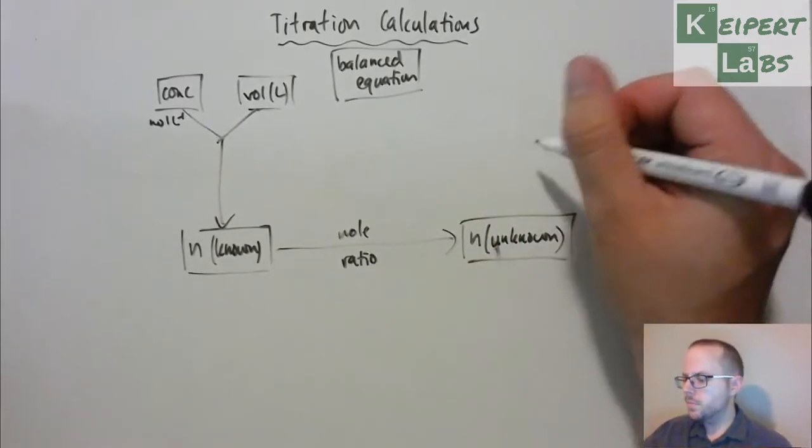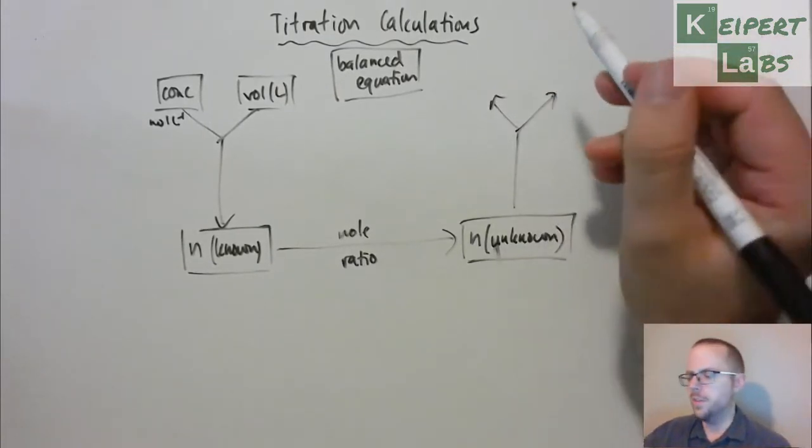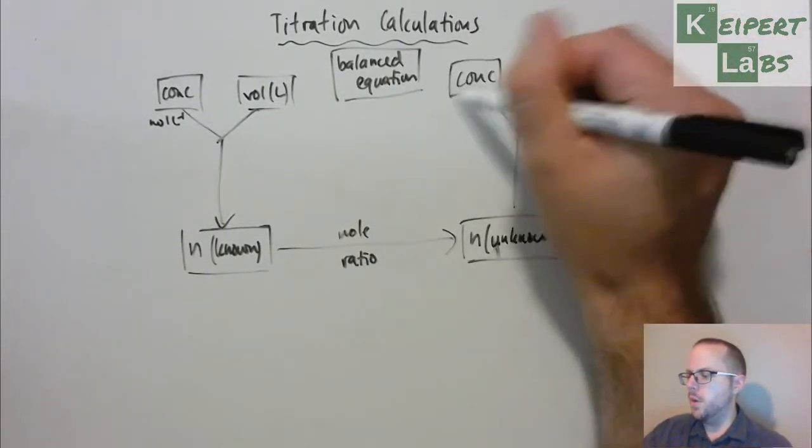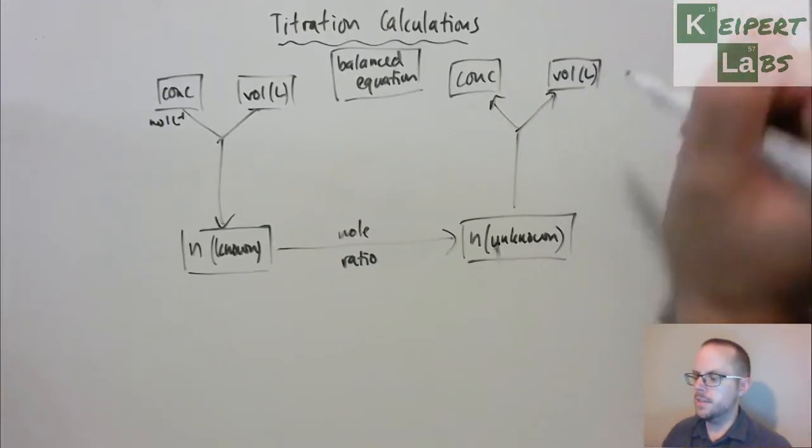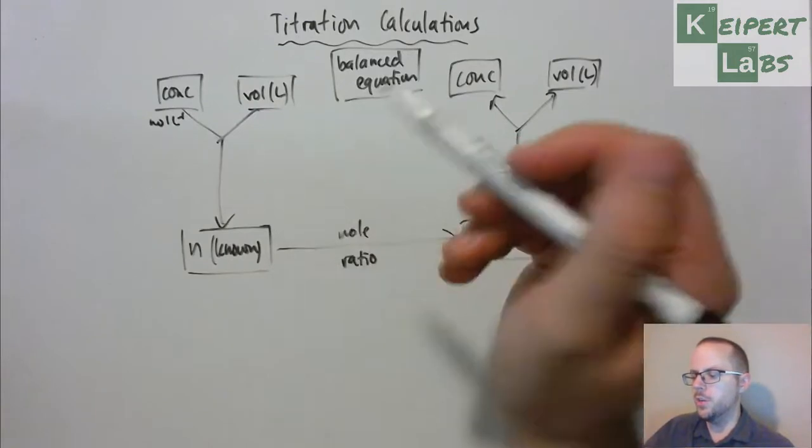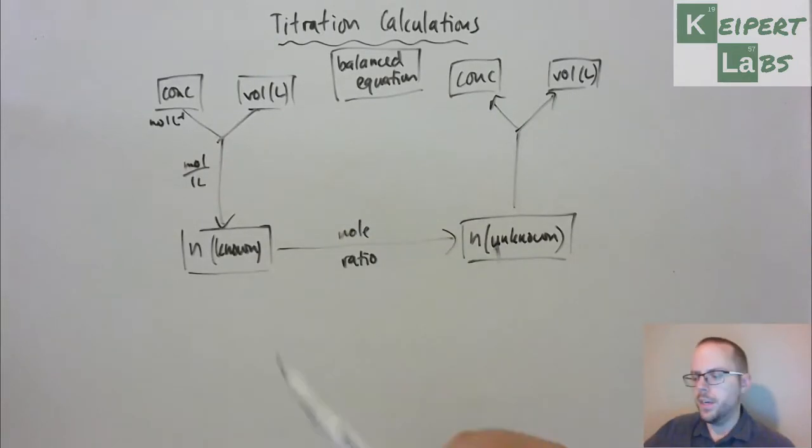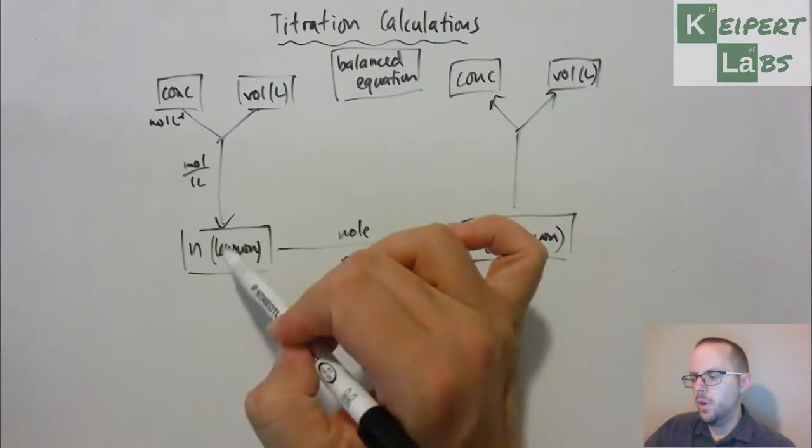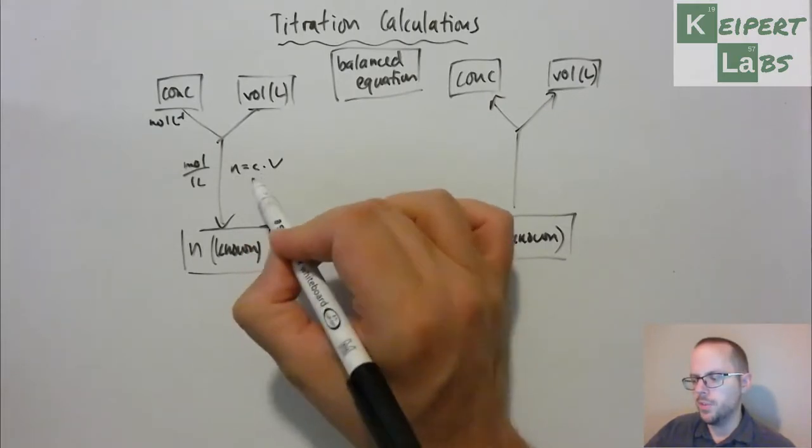And then from there, depending on what exactly the question is asking of us and which of the things that we don't know, we can either determine the concentration of our unknown or we can determine the titration volume of our unknown volume in litres. At this point here and here, there's a relationship, a formula that we can use. Now there's two approaches we can use here. We can use concentration as a conversion factor to go between volume and moles, or we can use the formula which is M equals C times V. The moles equals concentration times volume.